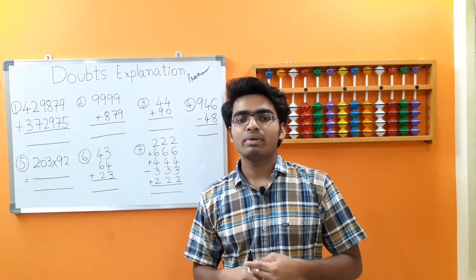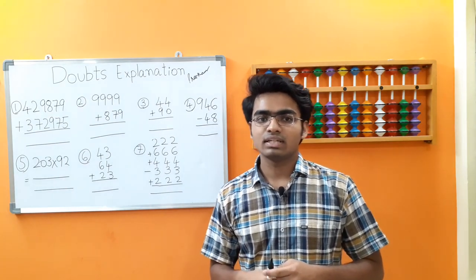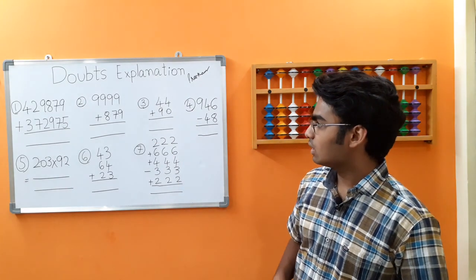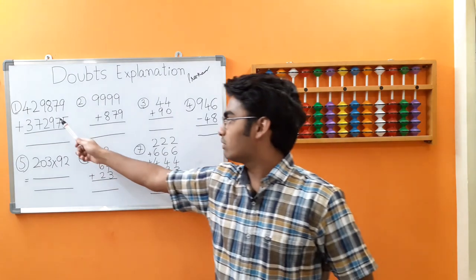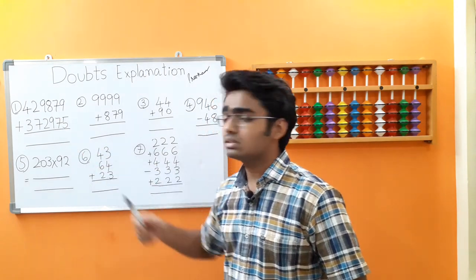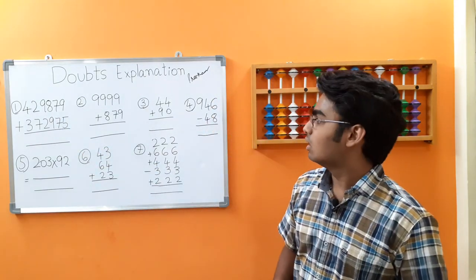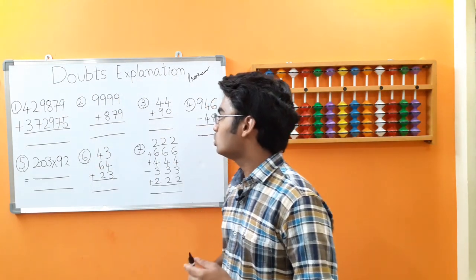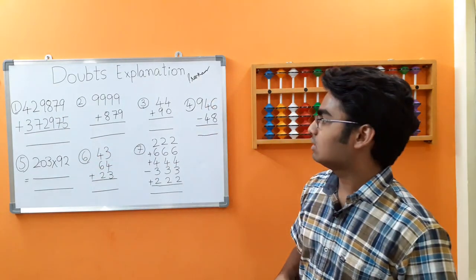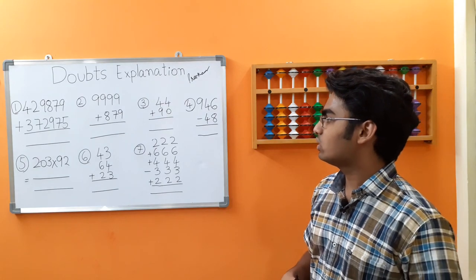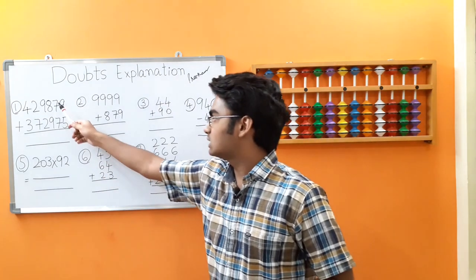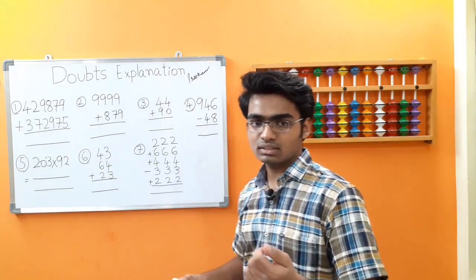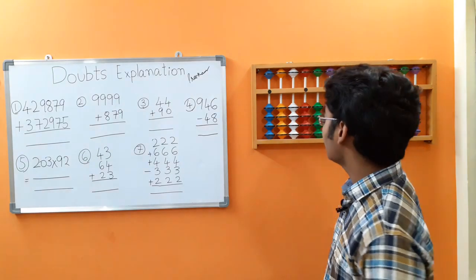With that being said, let's get started with the doubts explanation series. This was asked by one of our subscribers: 429879 plus 372975. This is a 6-digit plus 6-digit addition. Let's start adding right away.